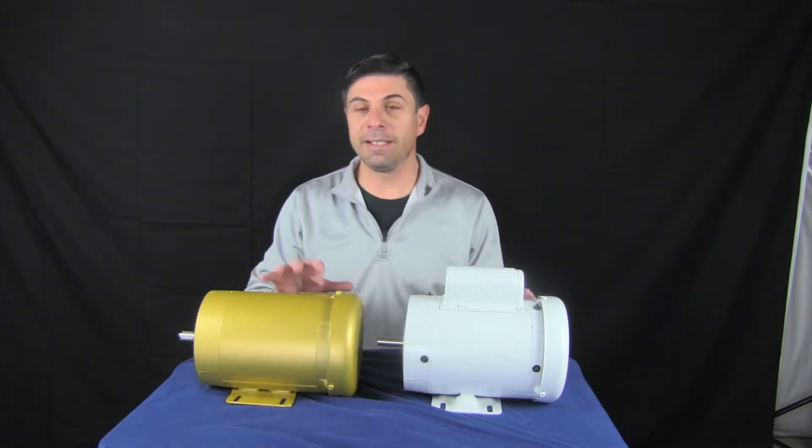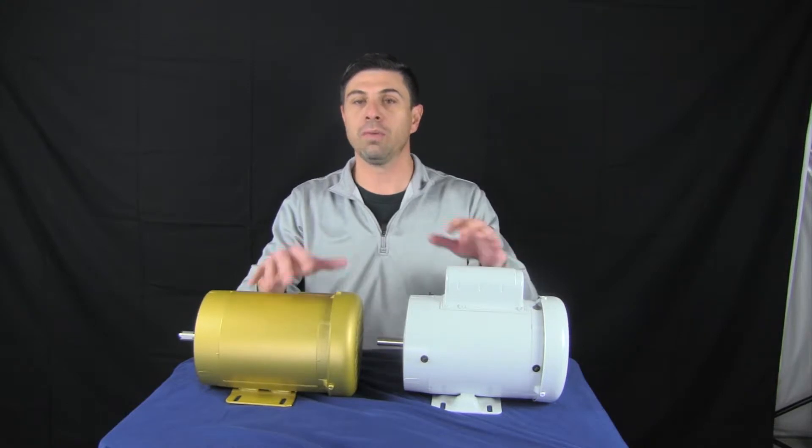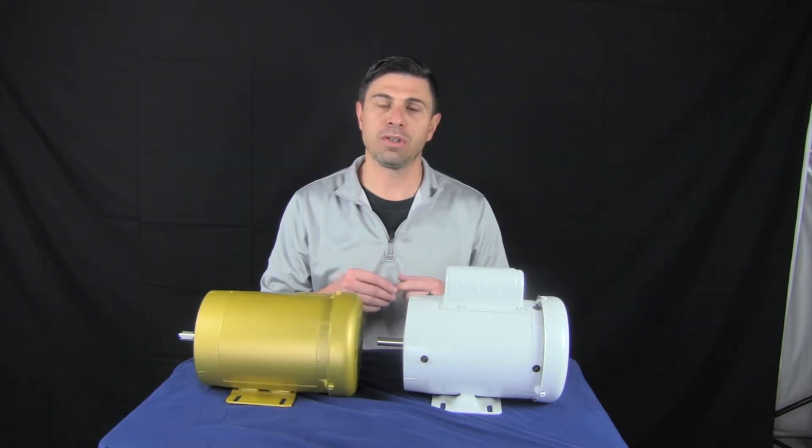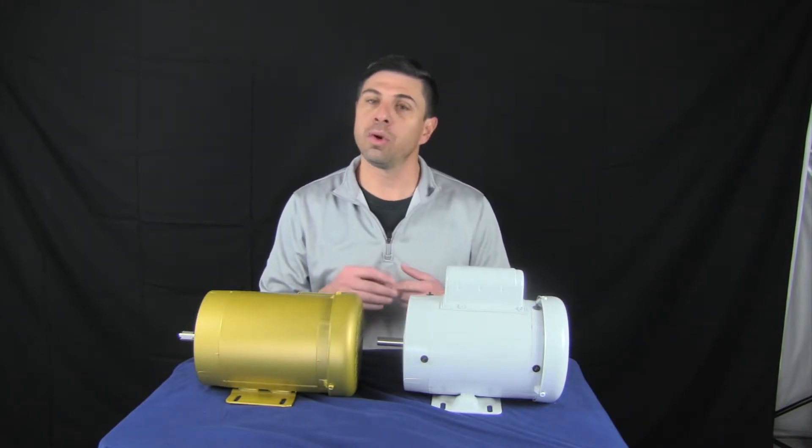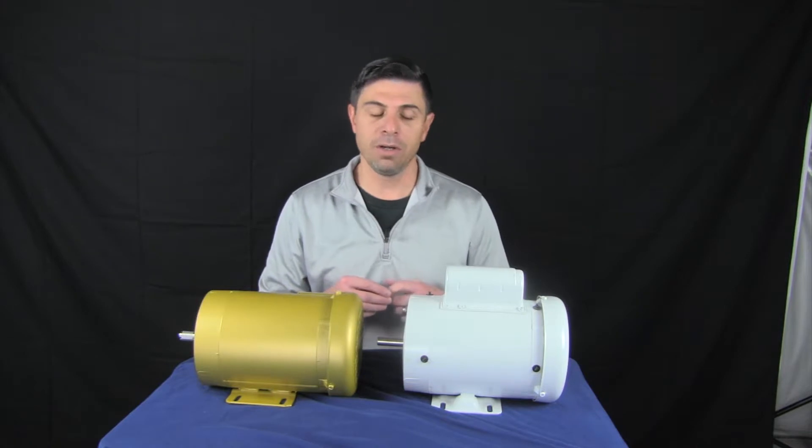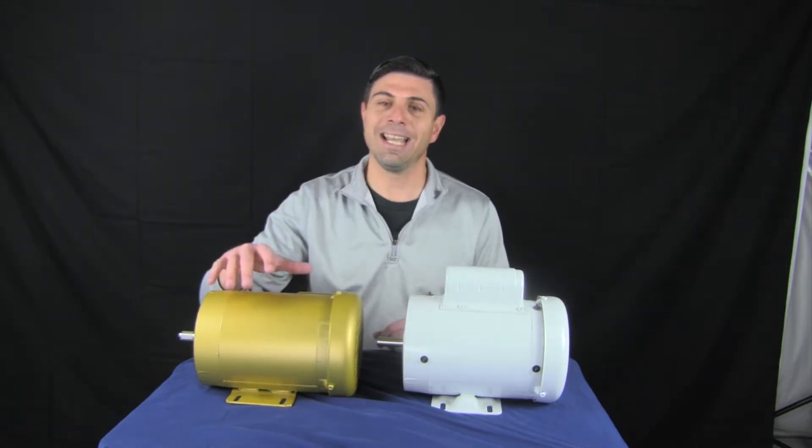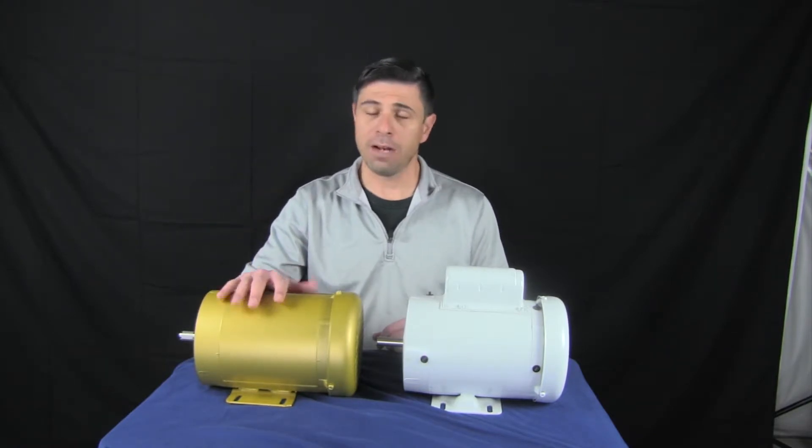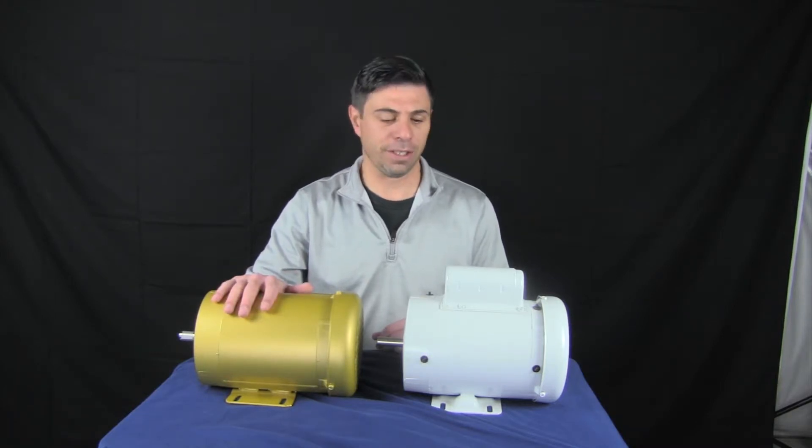And really the basic differences between these motors and your more popular industrial motors like the ODP, which is open drip proof motor, and your TENV motor, which is totally enclosed non-ventilated motor. The ODP is gonna have vents along the enclosure, so it's an open enclosure, so debris can get inside the motor, and that'll be a quick way for you to identify that type of motor in your facility.